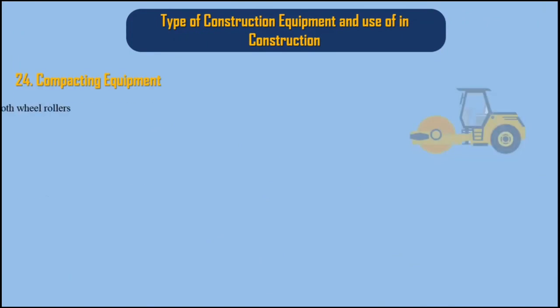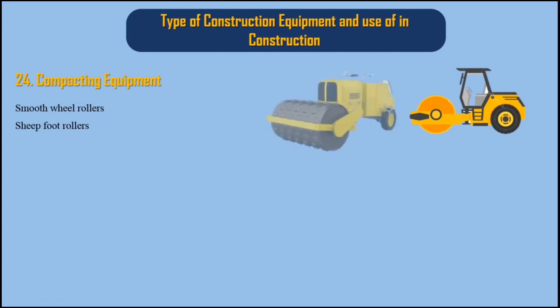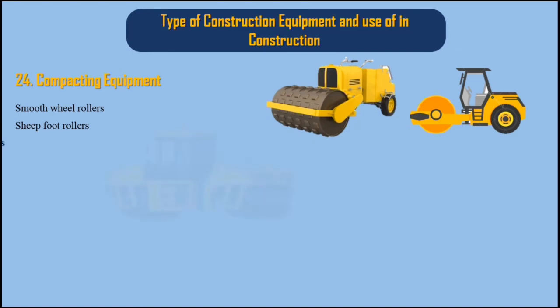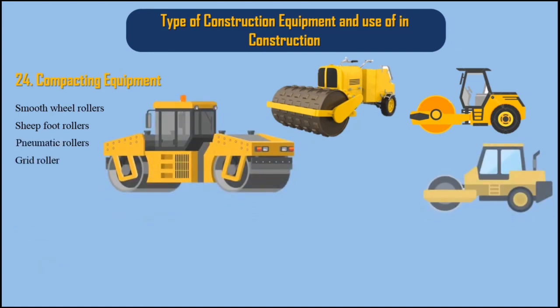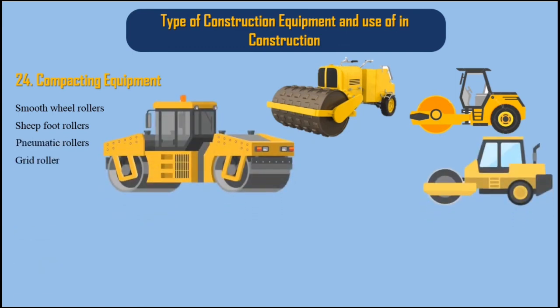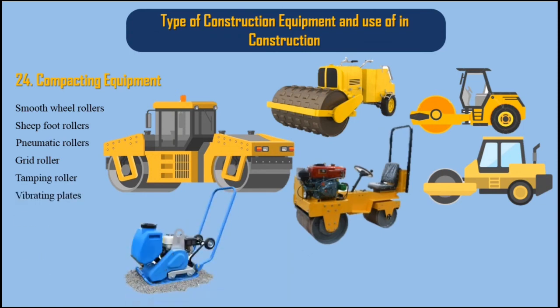24. Compacting Equipment. There are 7 types: Smooth wheel rollers, Sheep foot rollers, Pneumatic rollers, Grid roller, Tamping roller, Vibrating plates, and Vibratory compaction.